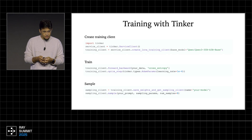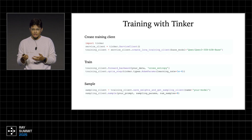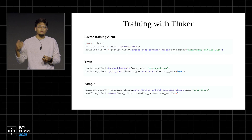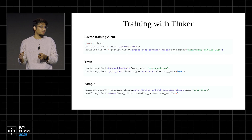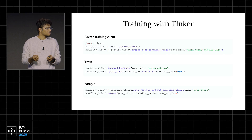The training is very simple. You first create a training client — you just import the Tinker Python package and create a training client. Then you use that training client to do forward, backward, and optimizer steps. Whenever you do this, the model weights are being updated. Then you can create a sampling client, save the weights from your training client, create a new sampling client out of it, and pass any prompt to get back responses.